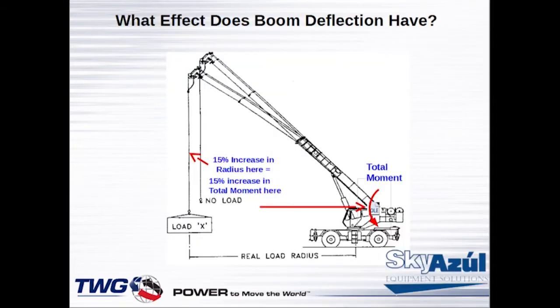The other item we have to include is boom deflection. We found early on this caused a big difference in the amount of moment that was created — how much that boom bent. As these booms get longer and longer, that deflection becomes greater and the radius becomes greater, so the system has to account for that. We call it BDC, or boom deflection correction, where we send the boom out and load it up with about 80% of the rated load, then do a radius correction.